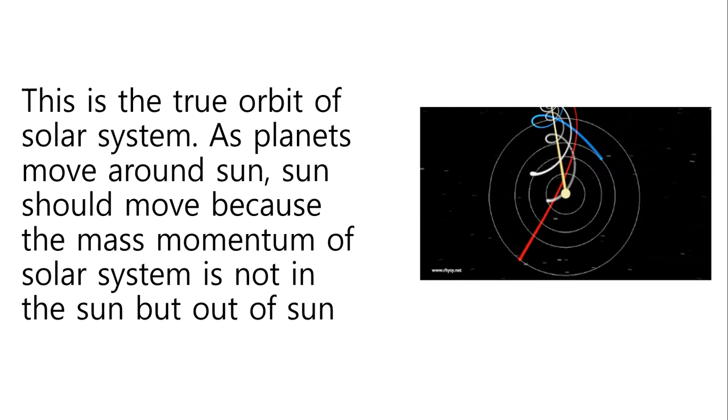This is the true orbit of the solar system. As planets move around the sun, the sun should move because the mass moment of the solar system is not in the sun, but out of the sun.